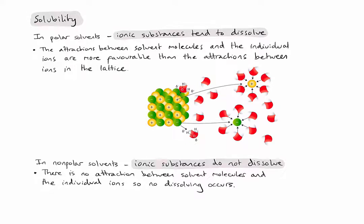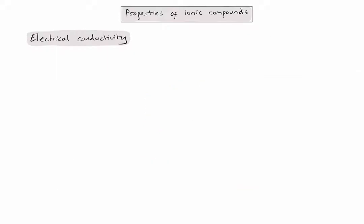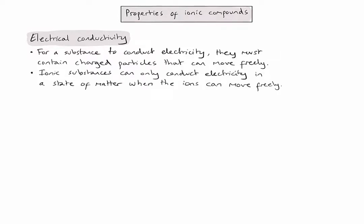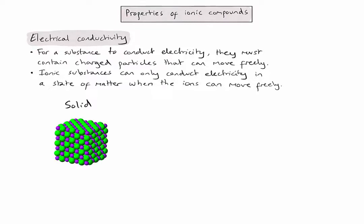Finally, let's consider electrical conductivity. The first thing to know is that for a substance to conduct electricity, it must contain charged particles that can move freely. Therefore, ionic substances can only conduct electricity in a state of matter where the ions can move freely. Let's first consider a solid ionic substance.